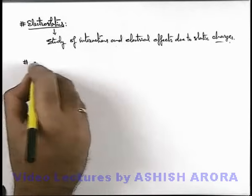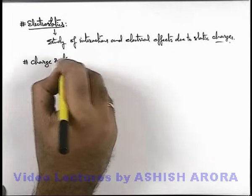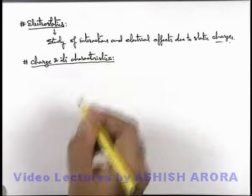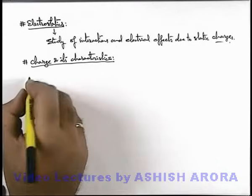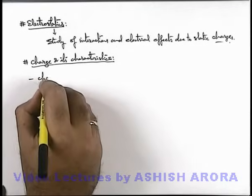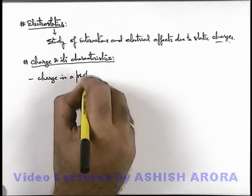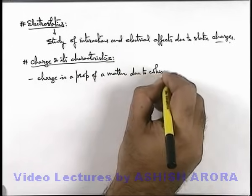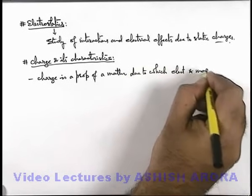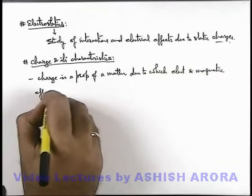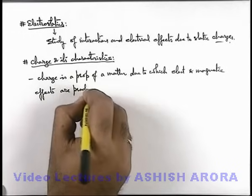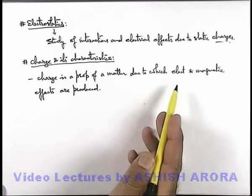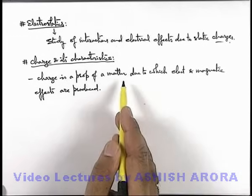So the very first thing we are going to study about is a charge and its characteristics. There are few facts which we need to understand and discuss one by one. The very first thing is what do we mean by a charge. We can simply state that charge is a property of a matter due to which electrical and magnetic effects are produced. In your early classes you might have studied about electricity and magnetism, and all kind of electrical and magnetic effects are produced by a property of matter which is termed as a charge.